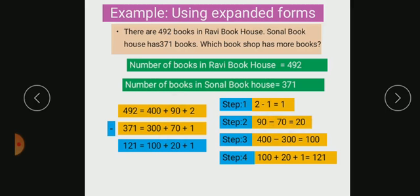Step 3, you should subtract hundreds place. It is 400 minus 300. 400 minus 300 becomes 100. So the answer is 100 plus 20 plus 1. That means 121. So if you subtract 371 from 492, you will get 121.